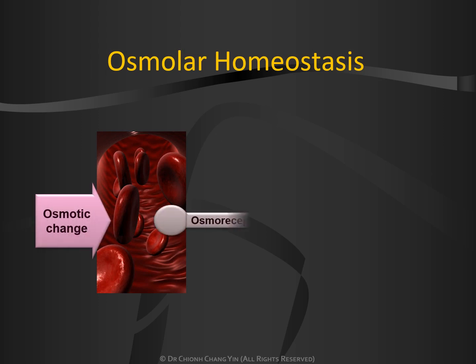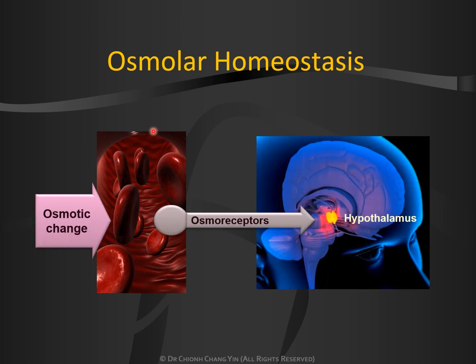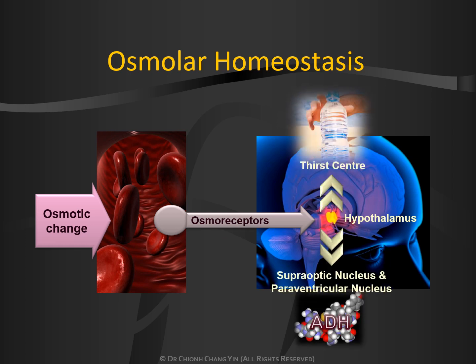If there is an osmotic change in the intravascular compartment, this typically stimulates the osmoreceptors, which in turn will stimulate the hypothalamus, resulting in activation of the thirst center such that the organism will seek water, and also stimulation of the supraoptic nucleus and the paraventricular nucleus to secrete more antidiuretic hormone.